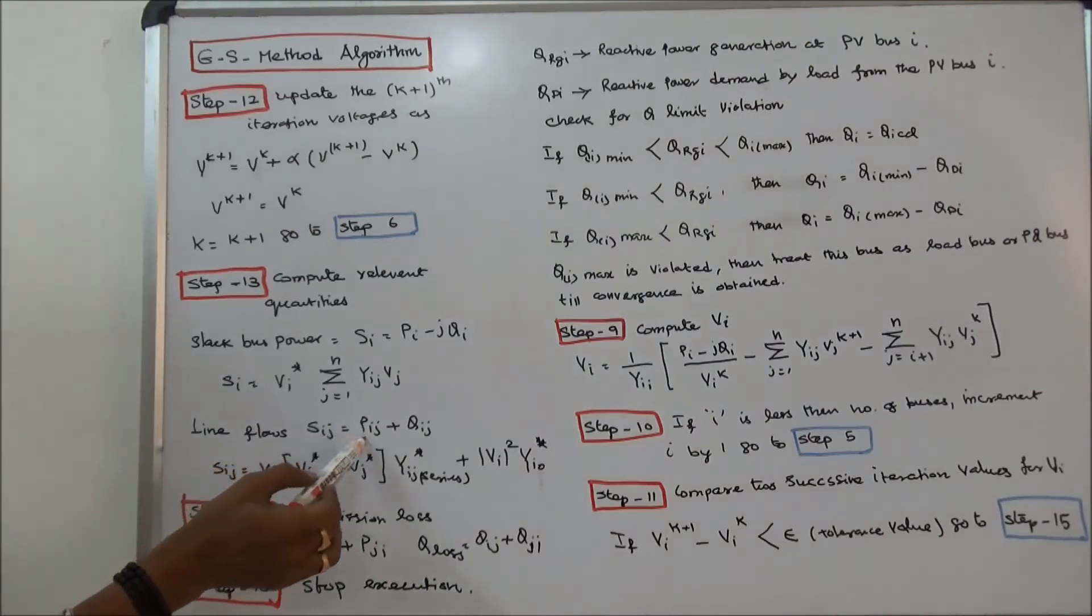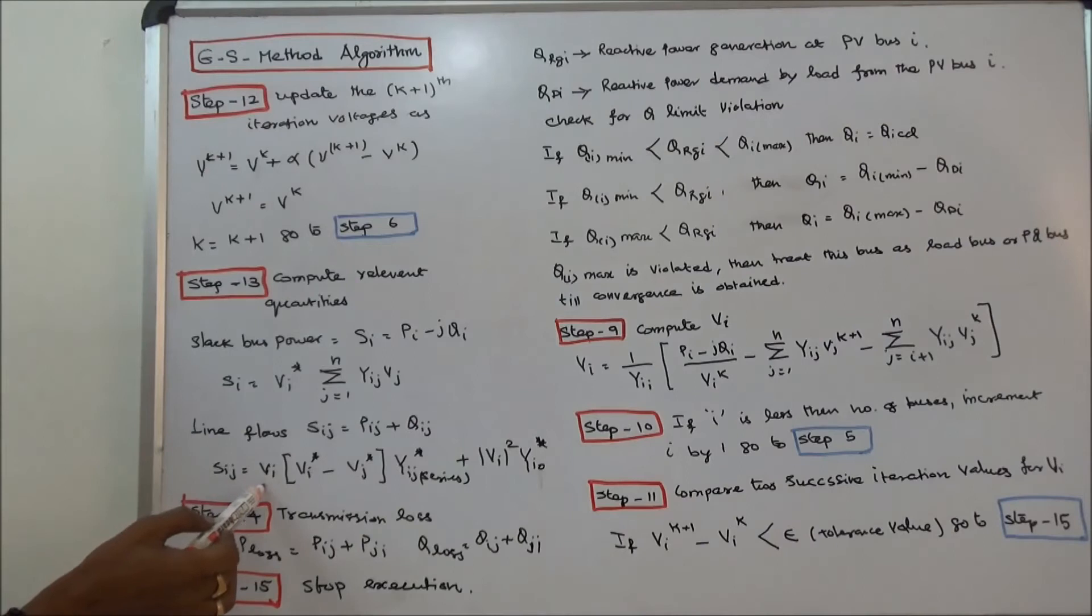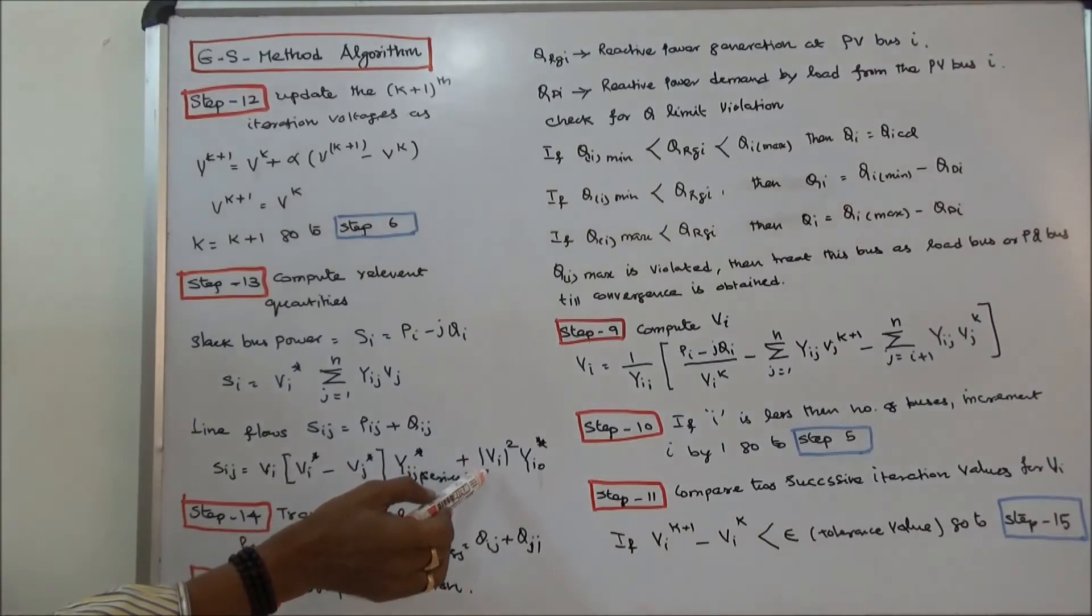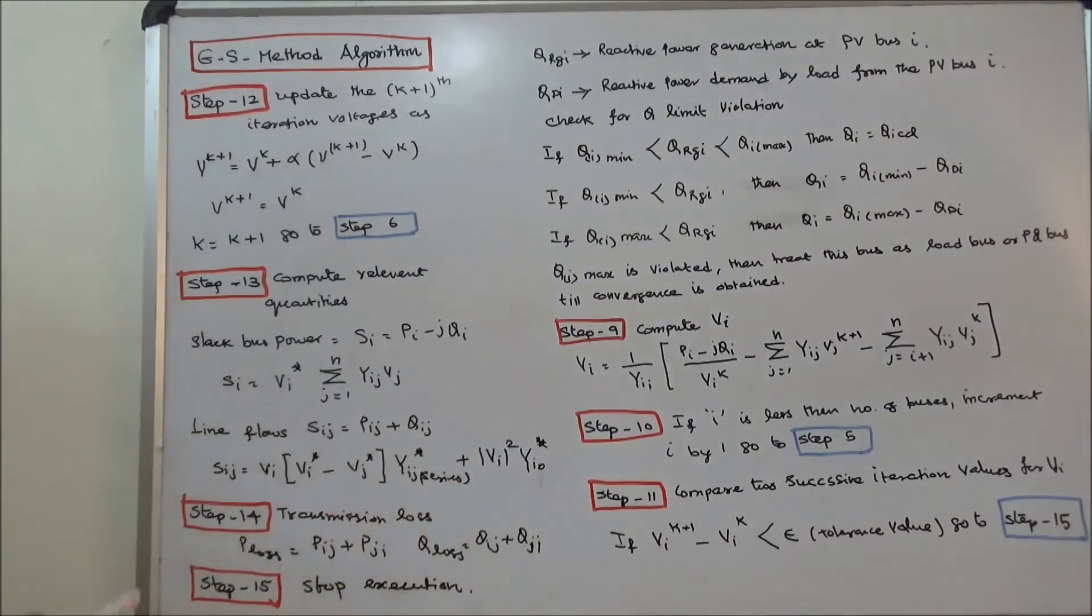SIJ is equal to PIJ plus j QIJ. SIJ is equal to VI into (VI conjugate minus VJ conjugate) into YIJ conjugate series plus VI square minus VI square into YI0 conjugate. Step 14: Calculate the transmission loss. That is real power loss is equal to PIJ plus PJI. Reactive power loss is equal to QIJ plus QJI.